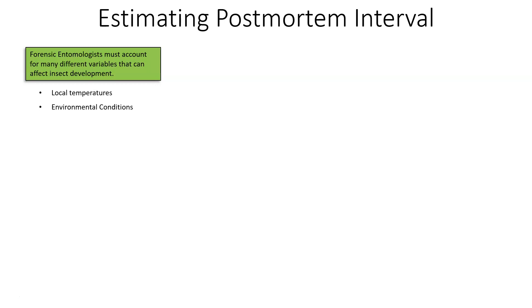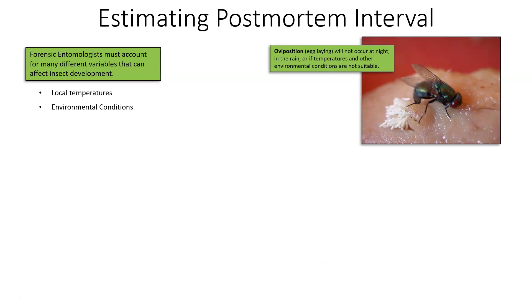Those are all important variables that have to be considered when estimating the post-mortem interval. A couple of terms you need to know: oviposition is egg laying. Oviposition will not occur at night — flies do not lay eggs in the night. They do not lay eggs in the rain, and they do not lay eggs if temperatures or other environmental conditions are not suitable.